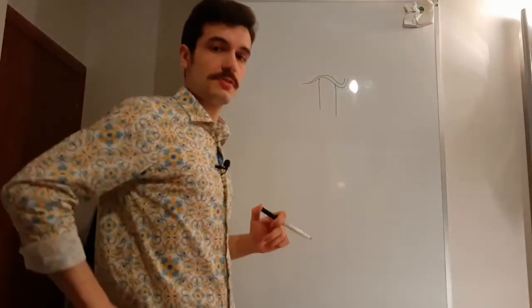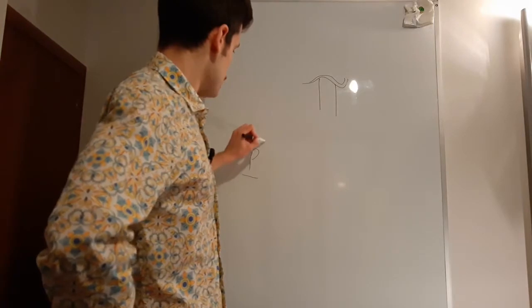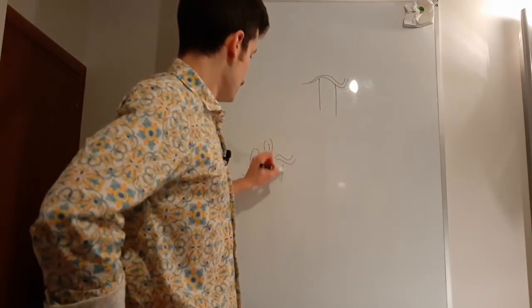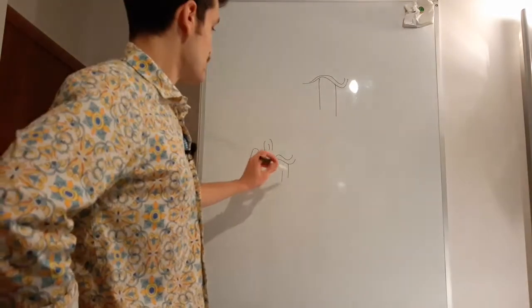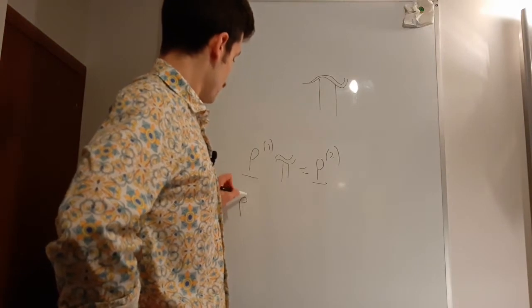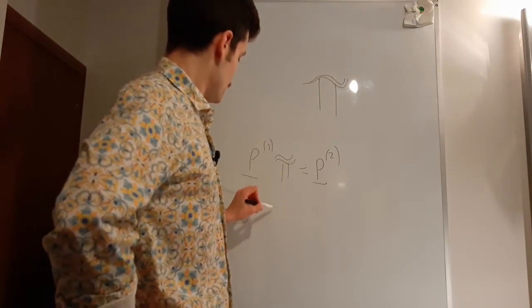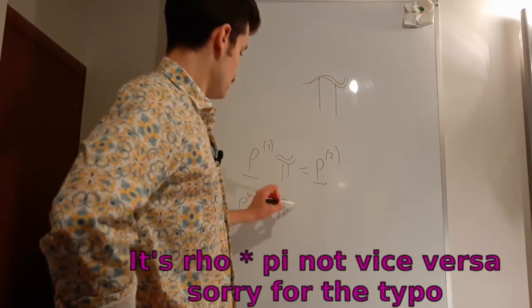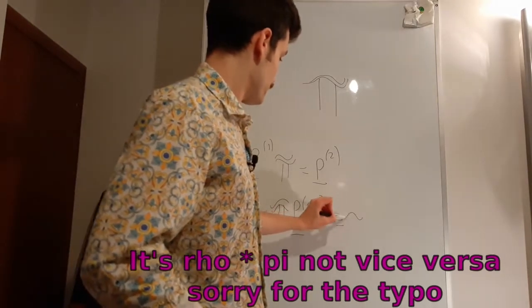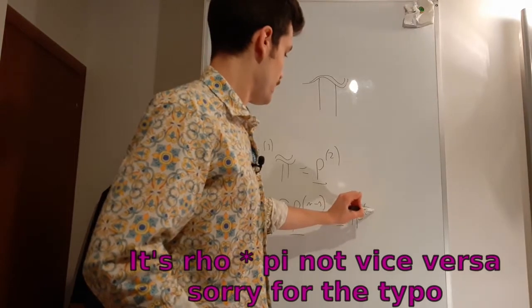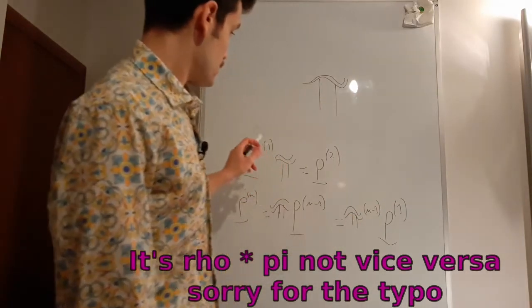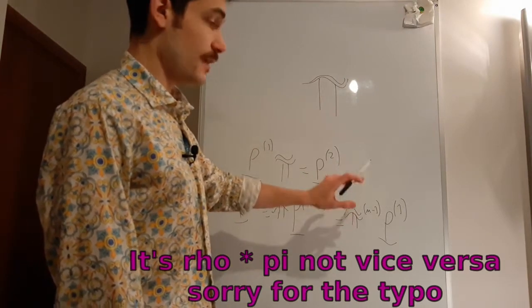This matrix tells you how the system will evolve. So if you have a starting distribution of your particles in a setting or sample and you apply your stochastic matrix on the right side, you will get the distribution of step 2. If you want to know the distribution of step n, you have to apply the matrix to the distribution of step n-1.